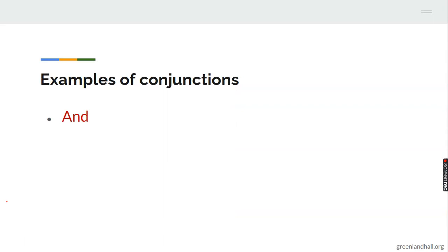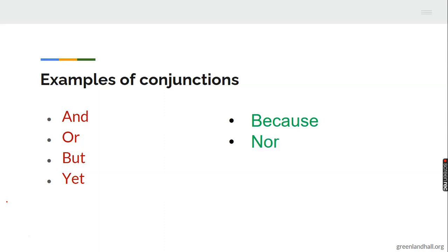Let's see examples. 'And' is a conjunction. Others include: or, but, yet, because, now, while, since, and several others.